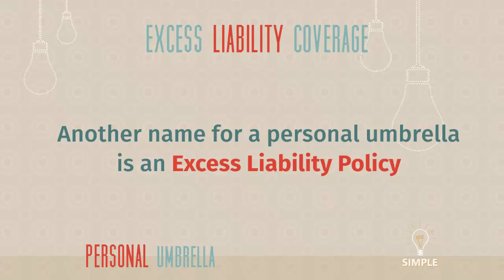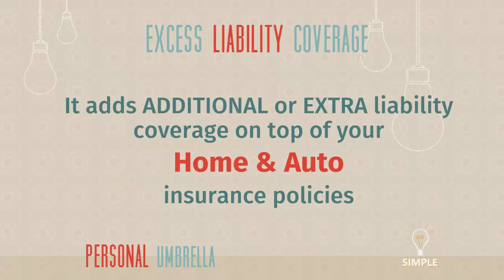Let's talk about personal umbrellas. Another name for a personal umbrella is an excess liability policy. Breaking those three words down tells you what it's about: 'excess' means more, 'liability' is coverage for bad things that happen to other people, and 'policy' is coverage an insurance company offers to take on risk. It adds additional or extra liability coverage on top of your home and auto insurance policies.